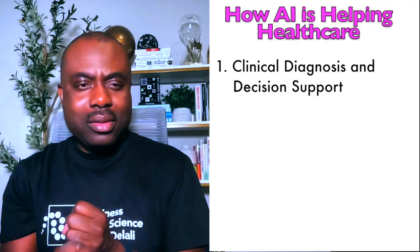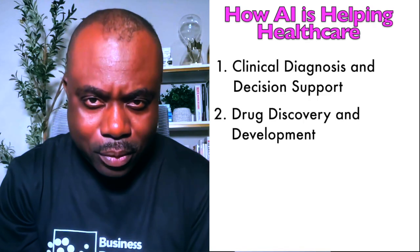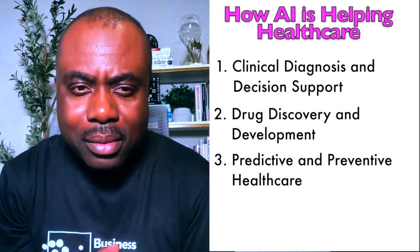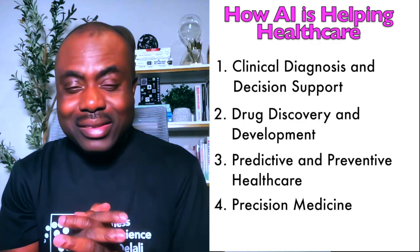I personally have a problem when doctors give generic treatment without considering individual differences — someone from Africa may respond differently than someone from America. That's why precision medicine matters. So far we've discussed four major ways AI is contributing to healthcare: clinical diagnosis and decision support, drug discovery and development, predictive and preventive healthcare, and precision medicine. There are many more ways AI is revolutionizing healthcare, so watch out for part two of this series.